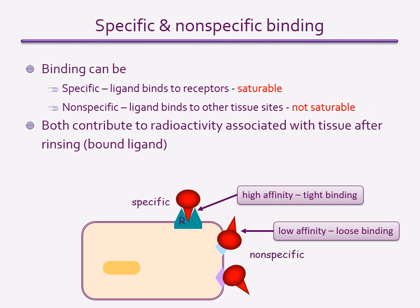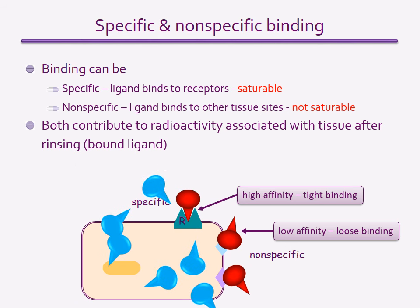We can distinguish specific and non-specific binding of a radio ligand by adding excess of ligand that does not contain the radio label — this is known as cold ligand. The cold ligand has a high affinity for the specific sites and competes for binding with the hot ligand. Because there is much more cold ligand than hot ligand, the cold ligand displaces the hot ligand from the target protein, leaving only the non-specific sites with radio ligand bound.